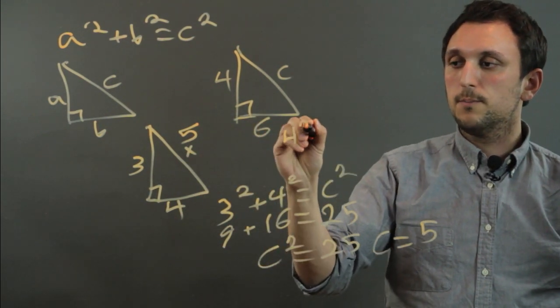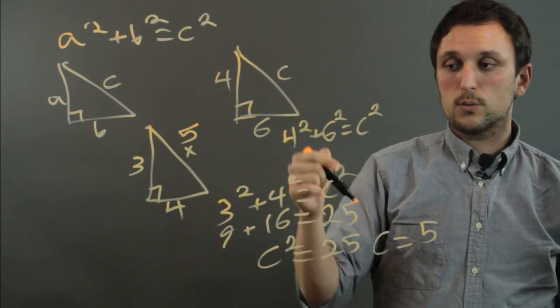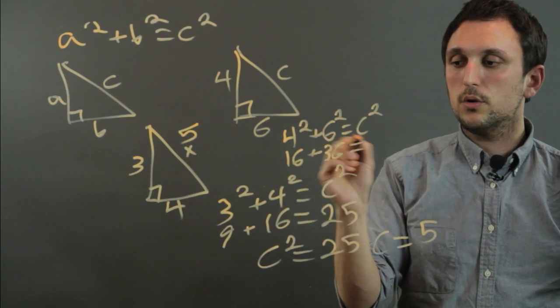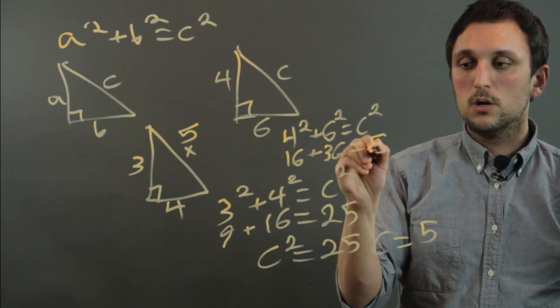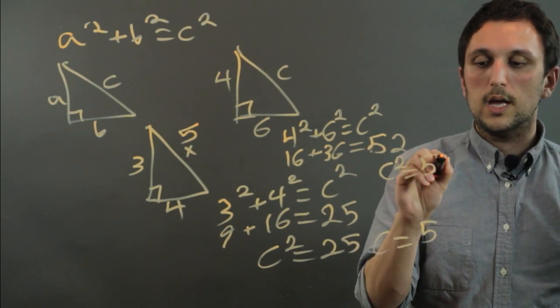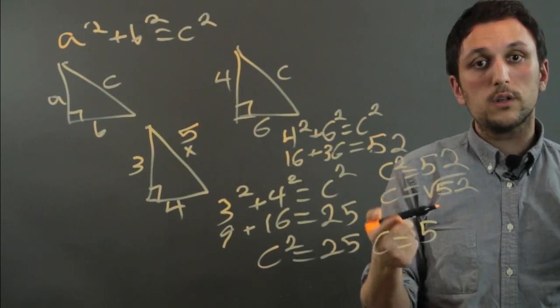In this case, you'd say 4 squared plus 6 squared equals C squared. So 4 squared is 16 plus 36 equals 52. So C squared is 52. And that means that C equals radical 52, which is roughly 7.1.